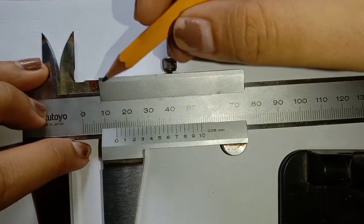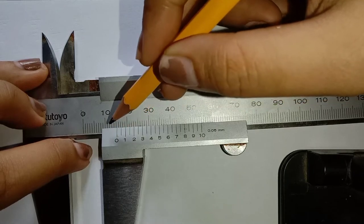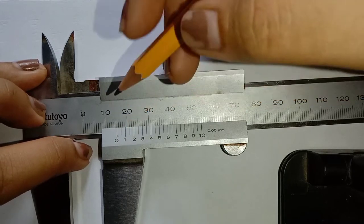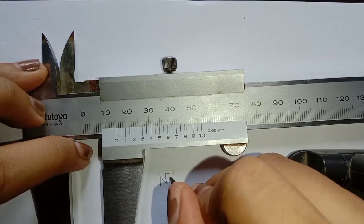Here the zero line in the vernier scale is after the 15 mm in the main scale. So, the measurement is 15 mm plus something more.